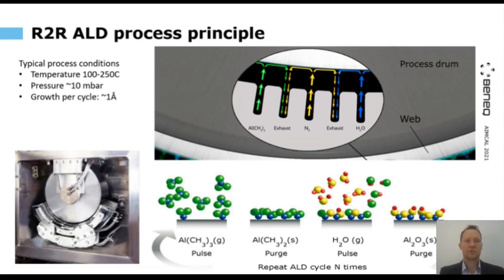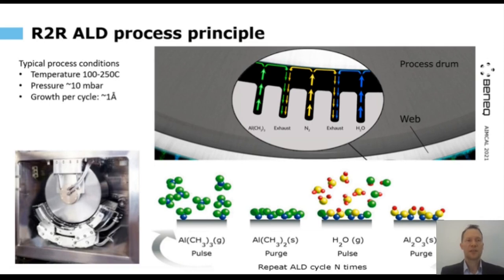Typical process conditions are such that temperature-wise, we are typically around 100 up to 250 degrees C normally — sometimes lower or higher, but that's the typical range. Pressure is normally somewhere in the 10 millibar or 10 Torr range, and can be even up to atmospheric pressure. So, under vacuum, but by no means high vacuum.